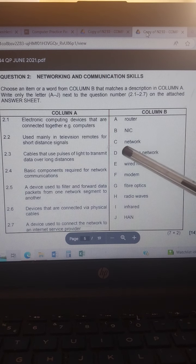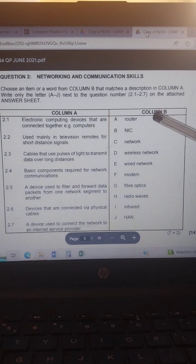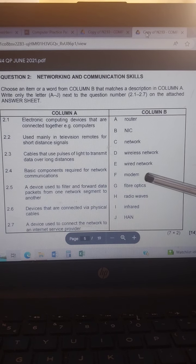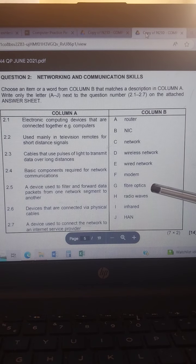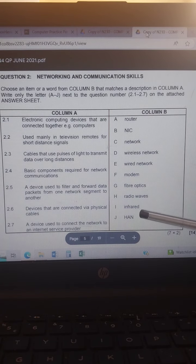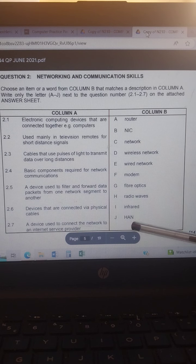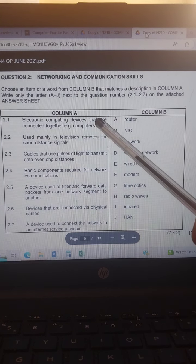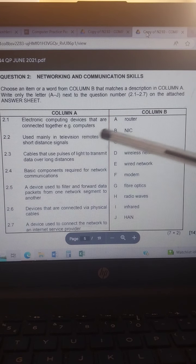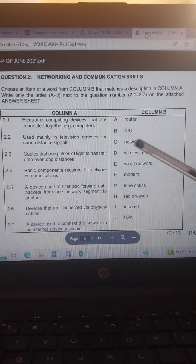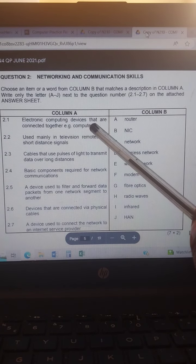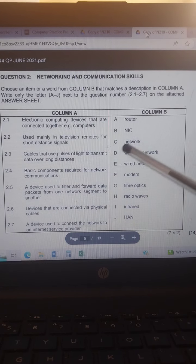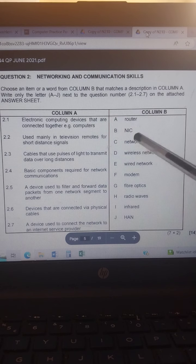E.g. we have computers. So here we have router, NIC, network, wireless network, wired network, modem, fiber optics, radio waves, infrared, and HAN. So the answer for this one, the first one, is C, network. Electronic computing devices that are connected together, e.g. computers, are networks.